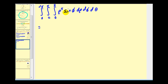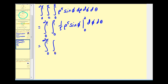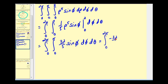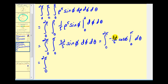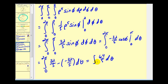Treating phi as a constant, we'll have one-fifth rho to the fifth sine phi. Replacing rho with two, we'd have thirty-two-fifths sine phi, and when rho is zero this is zero. Now we'll integrate with respect to phi, giving us negative thirty-two-fifths cosine phi. When phi is equal to pi, cosine pi is negative one, so we have positive thirty-two-fifths; minus when phi is zero, cosine zero is one, giving negative thirty-two-fifths. So we'll have positive sixty-four-fifths. That gives us sixty-four-fifths times theta evaluated from zero to two pi.